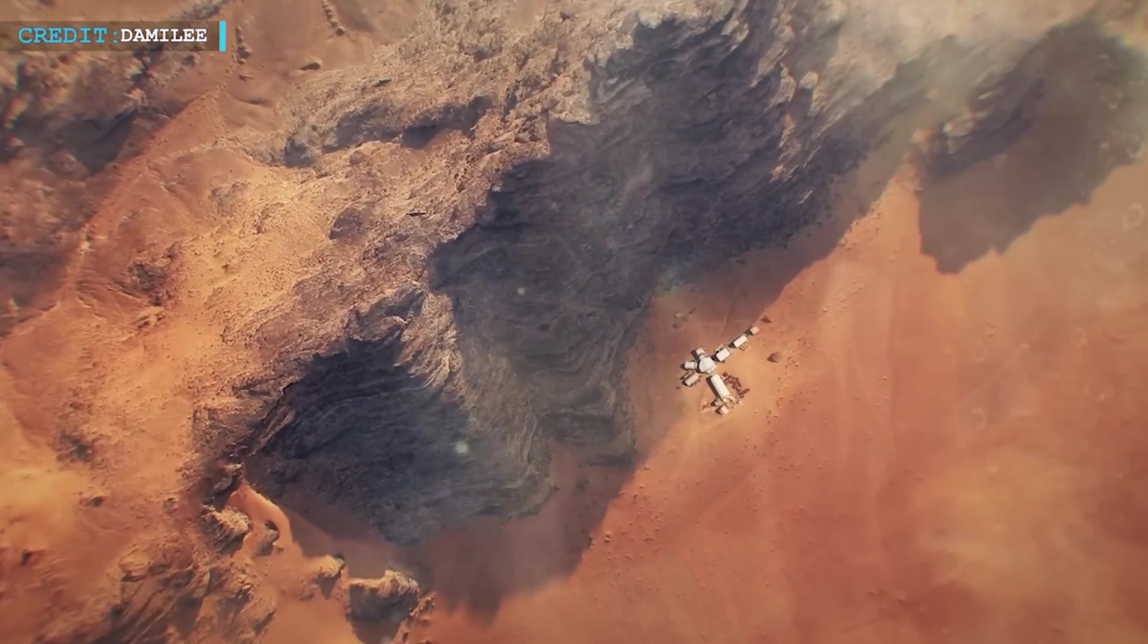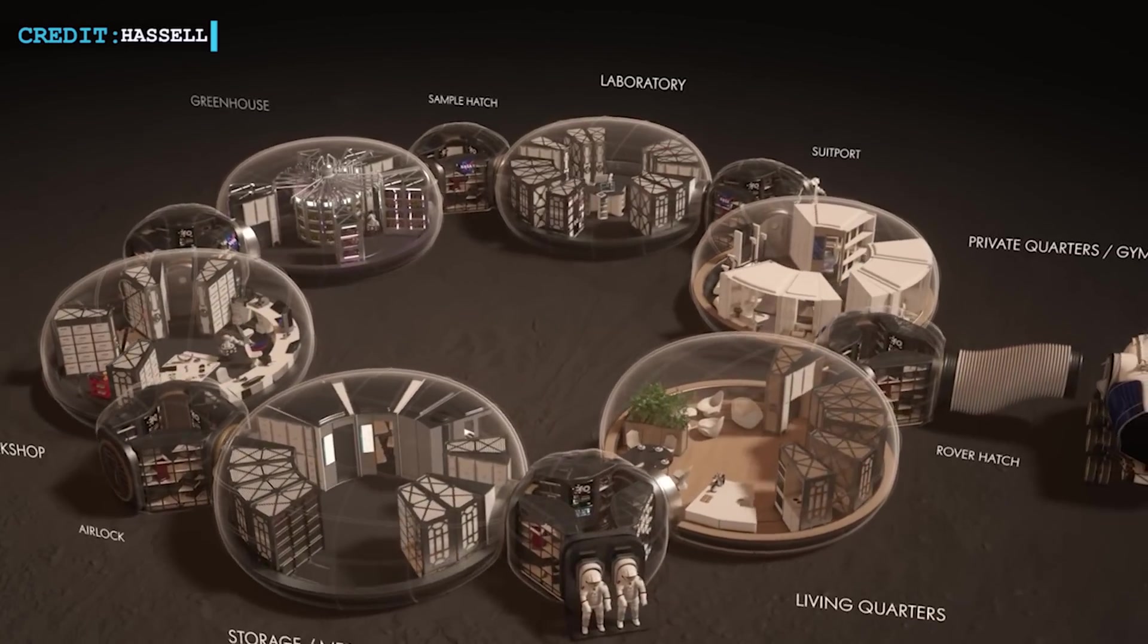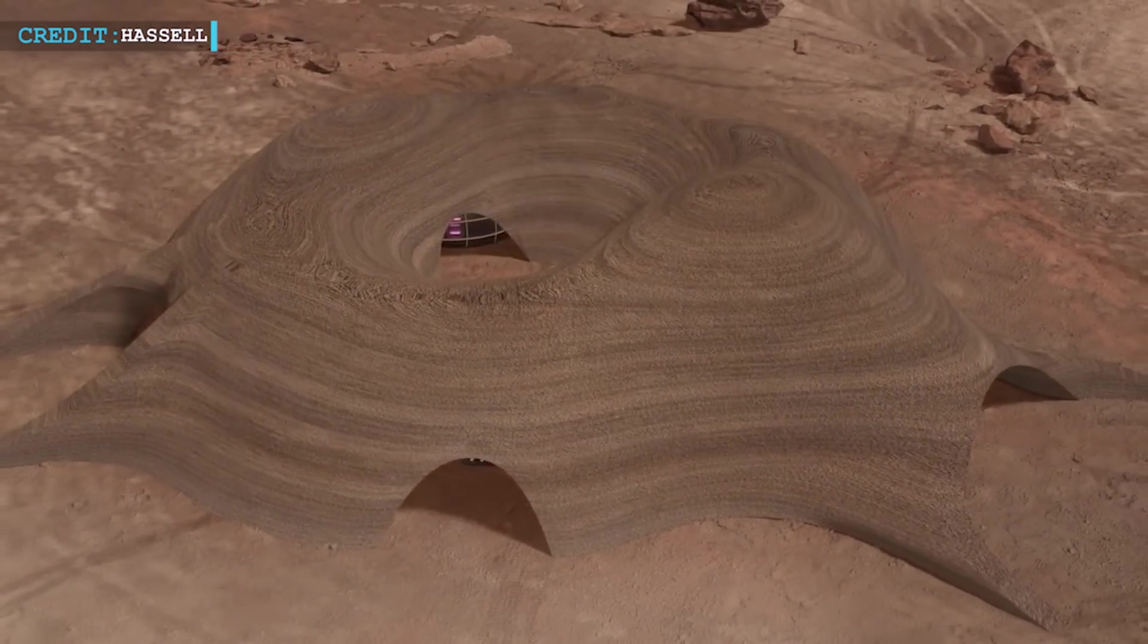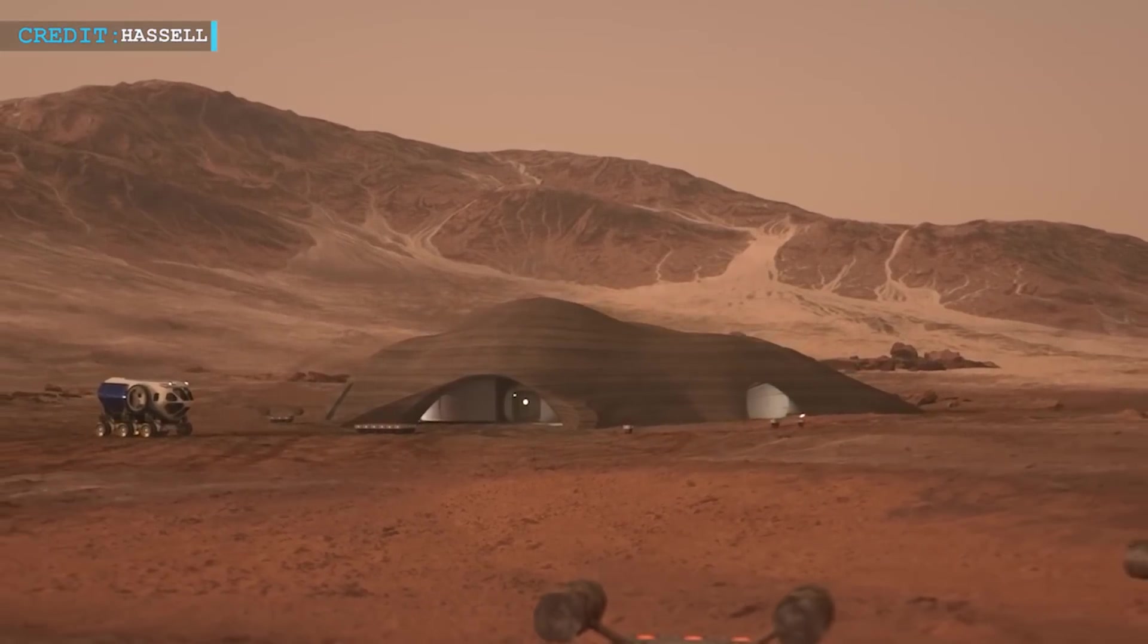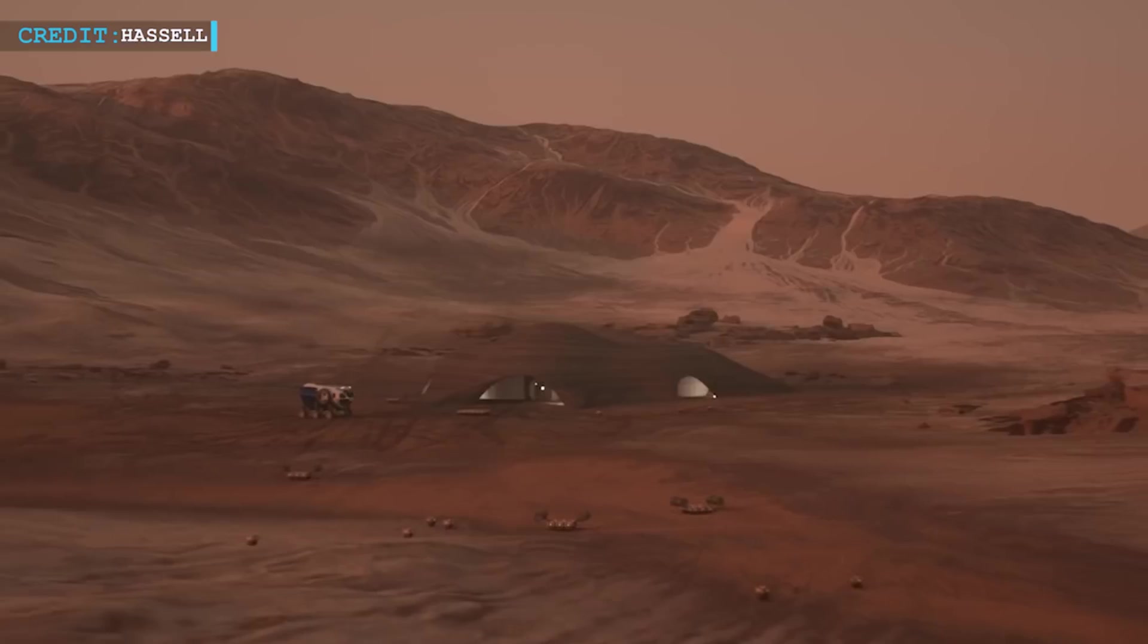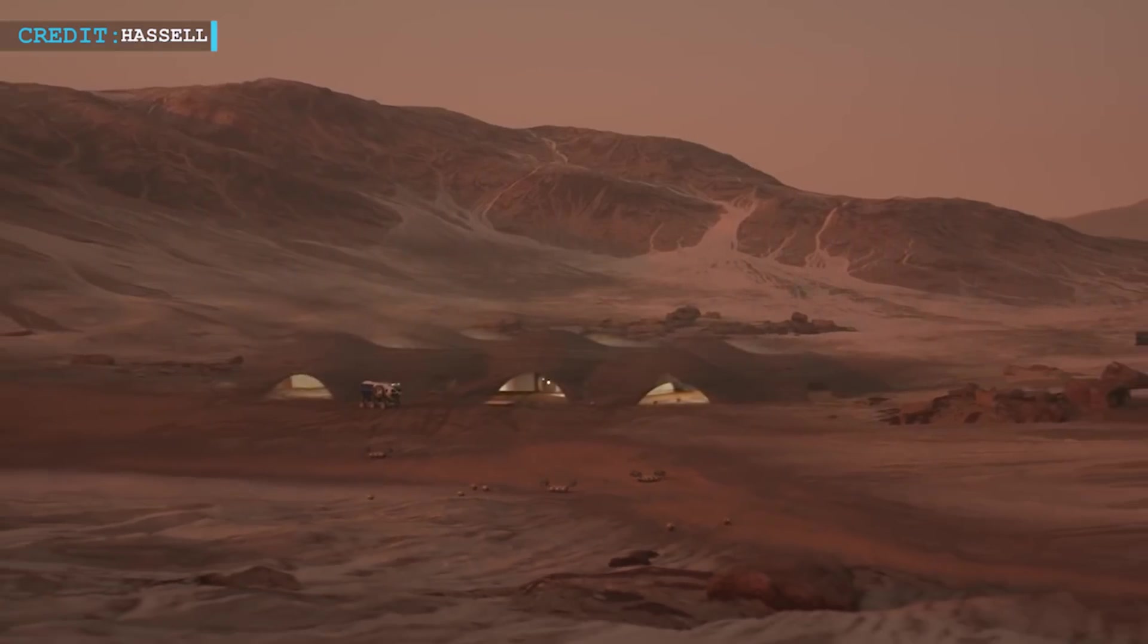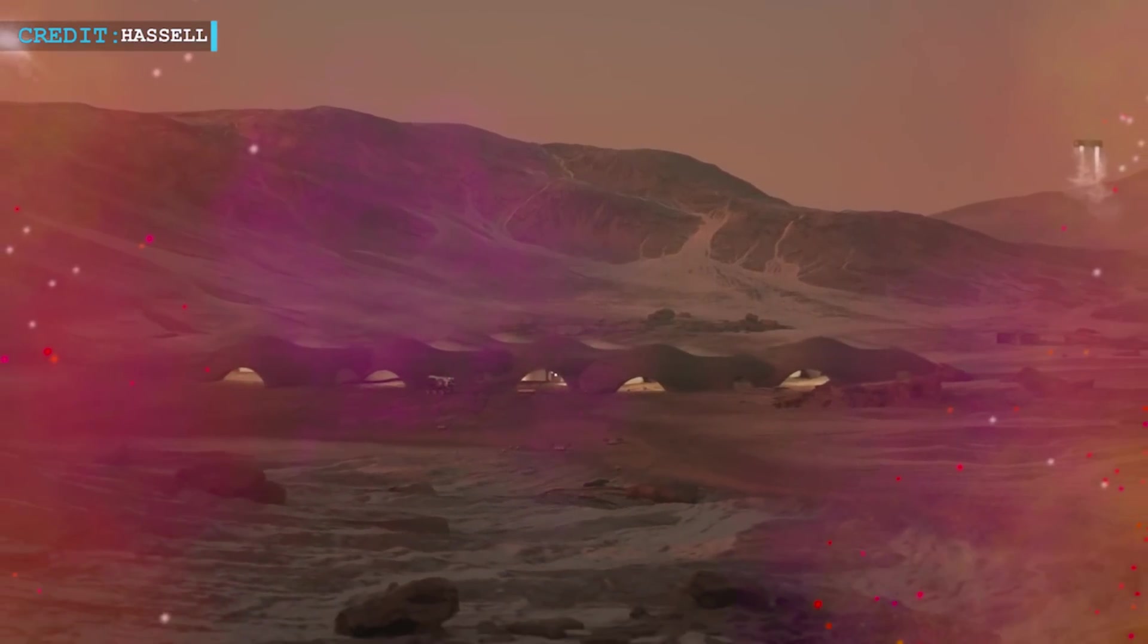Another critical consideration for Martian colonization is radiation shielding. Inflatable habitats provide effective protection against radiation, utilizing materials such as woven polypropylene matrix or hydrogen-rich foams. These shielding solutions are designed to safeguard the health and well-being of the inhabitants, mitigating the risks associated with prolonged exposure to cosmic radiation.